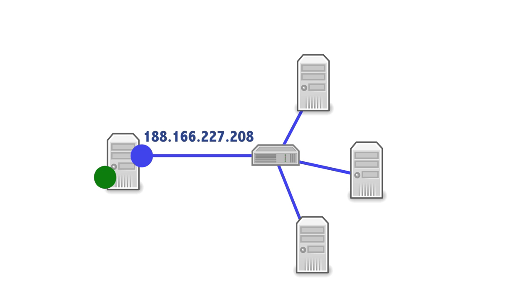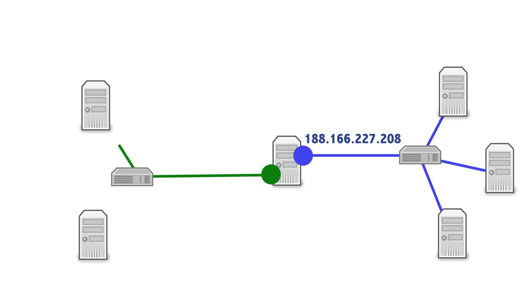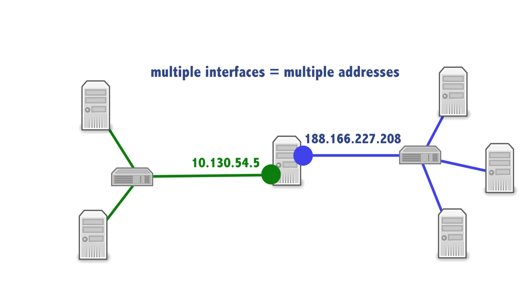The interesting thing is that a server or computer is not limited to a single network interface — in fact it may have as many network interfaces as it needs. For example, your home laptop might have two network interfaces: it might be connected to Ethernet and at the same time connected to Wi-Fi. Since your server might have multiple network interfaces, it can naturally participate in multiple networks, and in every network it will have its own unique IP address.